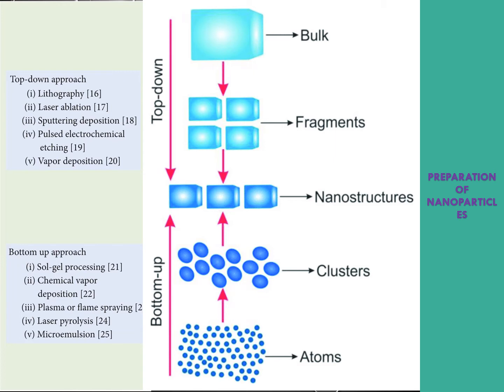To prepare nanomaterials, we have two approaches: the top-down approach and the bottom-up approach. Top-down means taking a bulk material and cutting it down to a smaller size to reach nanoscale — this is the top-down approach. The bottom-up approach involves starting from atomic size, which is in angstroms — much smaller than nanometers — and combining them, increasing the size to reach nanoscale.